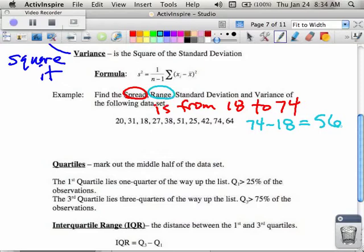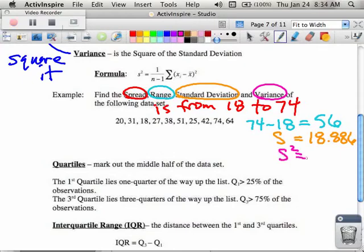The standard deviation came out of our calculator. That was the sx. And the standard deviation, we said, was 18.886. If I wanted to find my variance, all I would have to do is square that. So somebody could square 18.886, please.